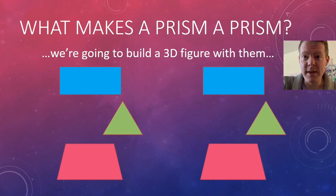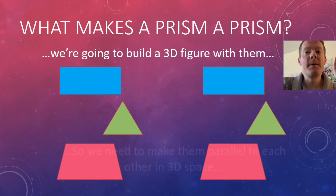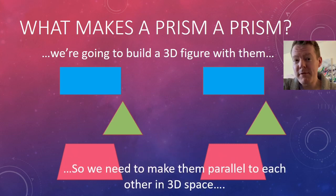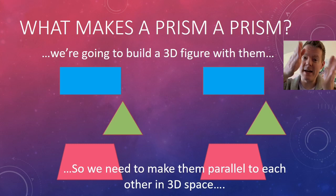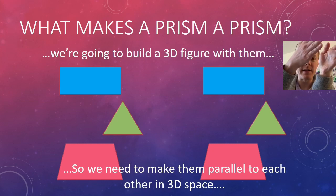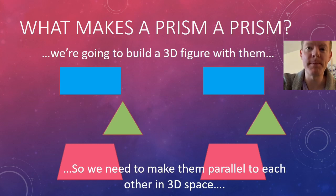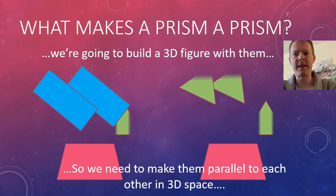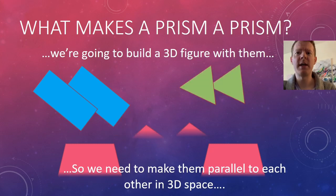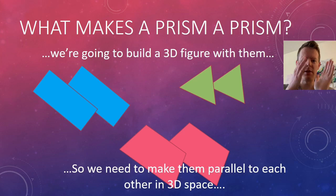Now we're going to build a 3D figure with these — three separate 3D figures. To build a 3D figure, we have to take these two copies and make them parallel to each other in 3D space. That's a bit unusual to think about, because we're talking about whole planes that have to line up to be parallel to one another. So I'll take my two rectangles and make them parallel in 3D space, and do the same with the triangles and trapezoids.